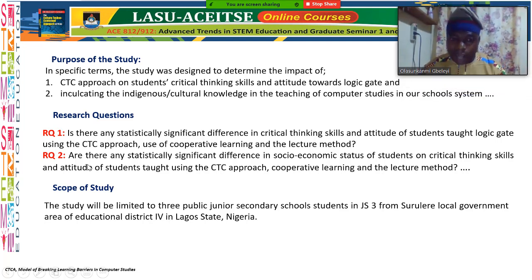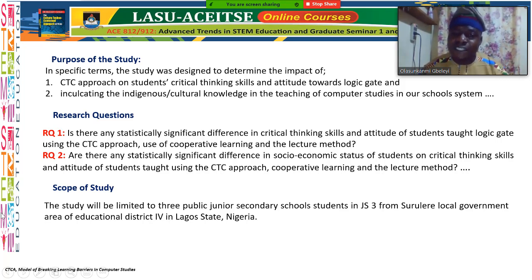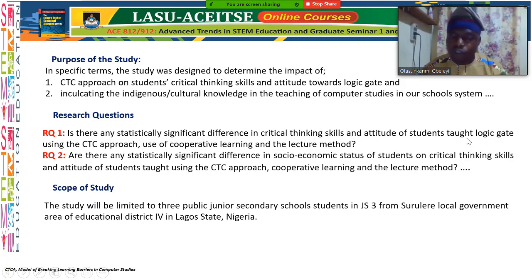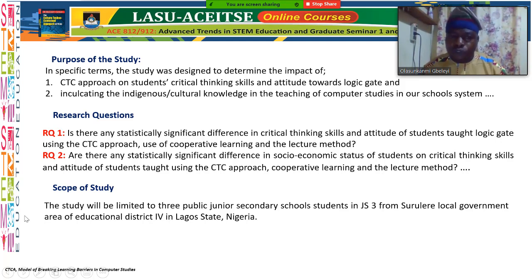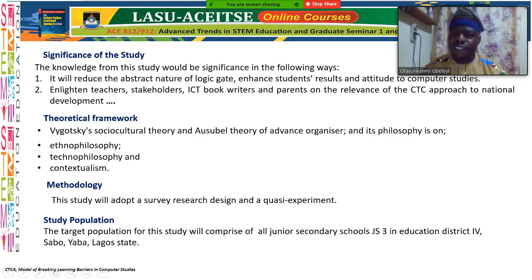My research questions are five and the hypotheses are five, as shown in the slides. One of them is: Is there any significant difference in the critical thinking and attitude of students using school location? The study will reduce the abstract nature of logic and enhance student performance and attitude in computer studies.